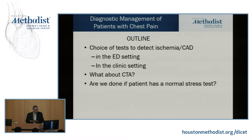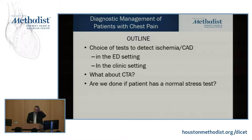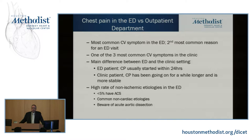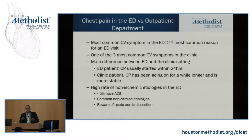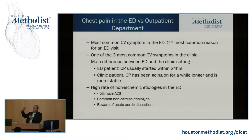We have two settings: the acute setting of the emergency department and the more comfortable chronic setting of the clinic. Chest pain is the most common cardiovascular symptom in an emergency department — the second most common reason at all to go to an ER, and one of the three most common symptoms in a clinic. The main difference between the ER and clinic is that the ER patient usually has symptoms for only 24 hours or so. The clinic patient quite often comes in with chest pain for the past month or two. Rapidity of onset of ischemic chest pain has a worse outcome.